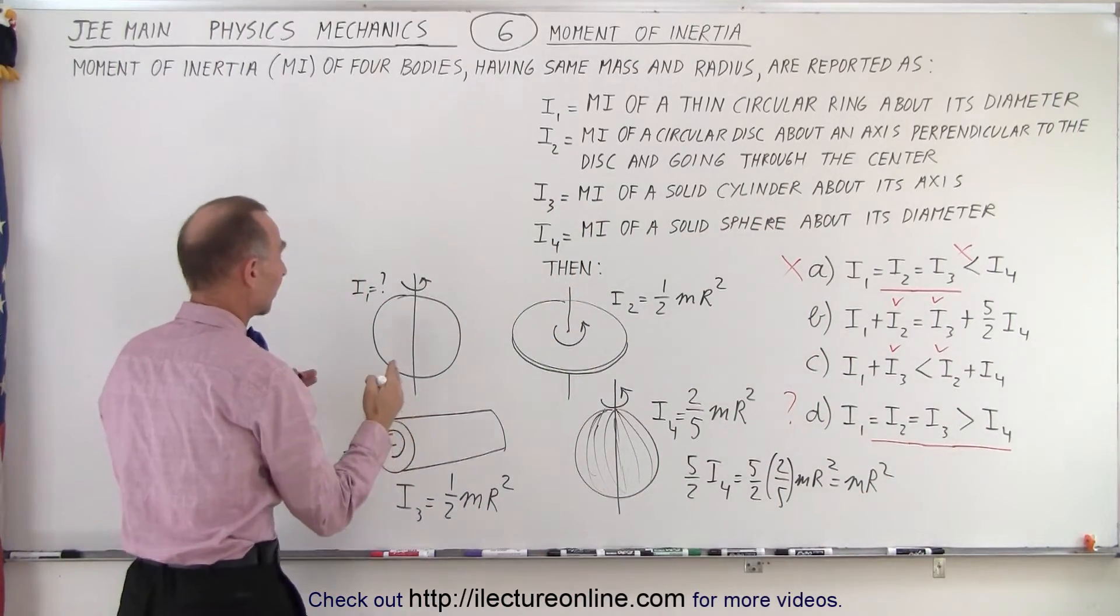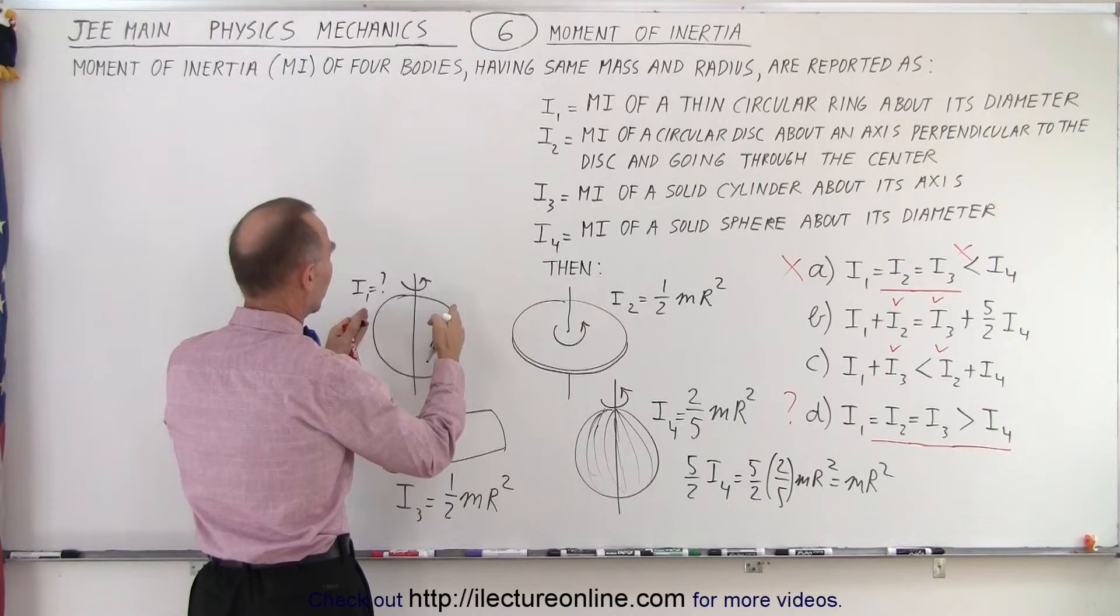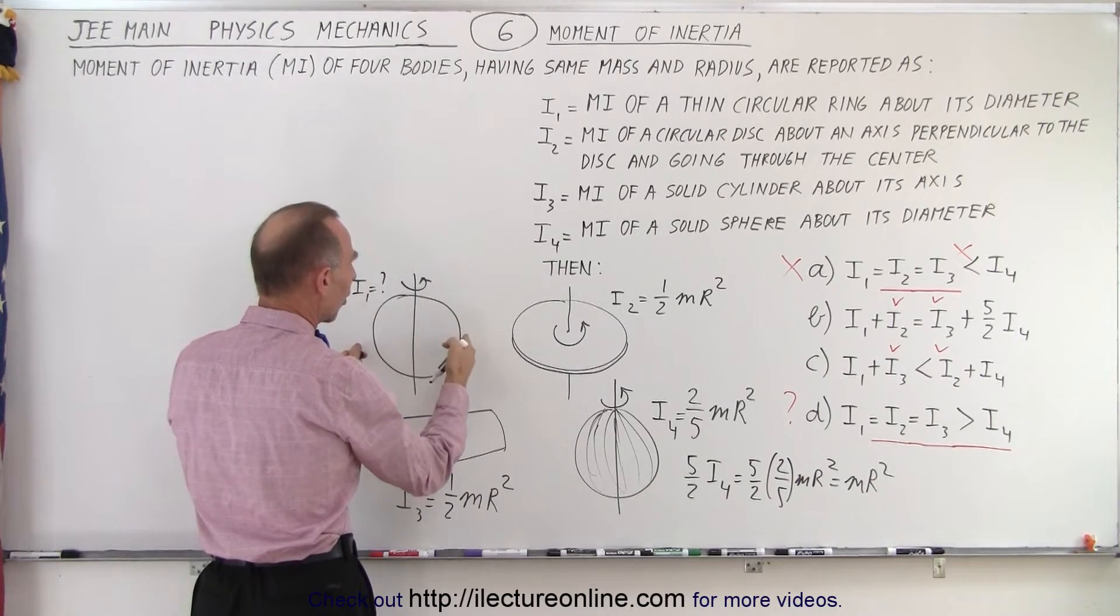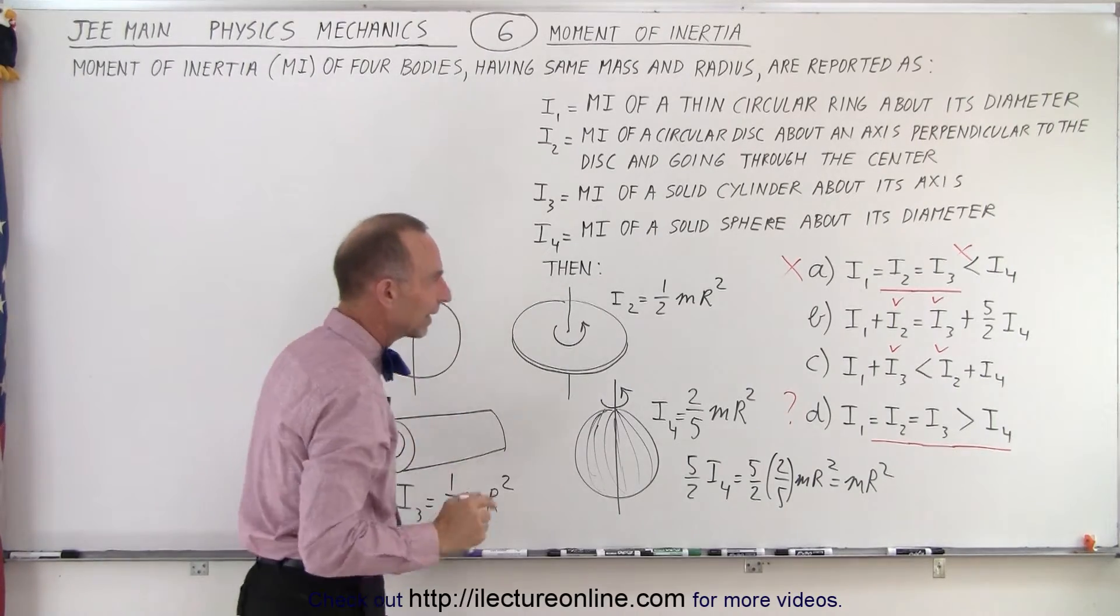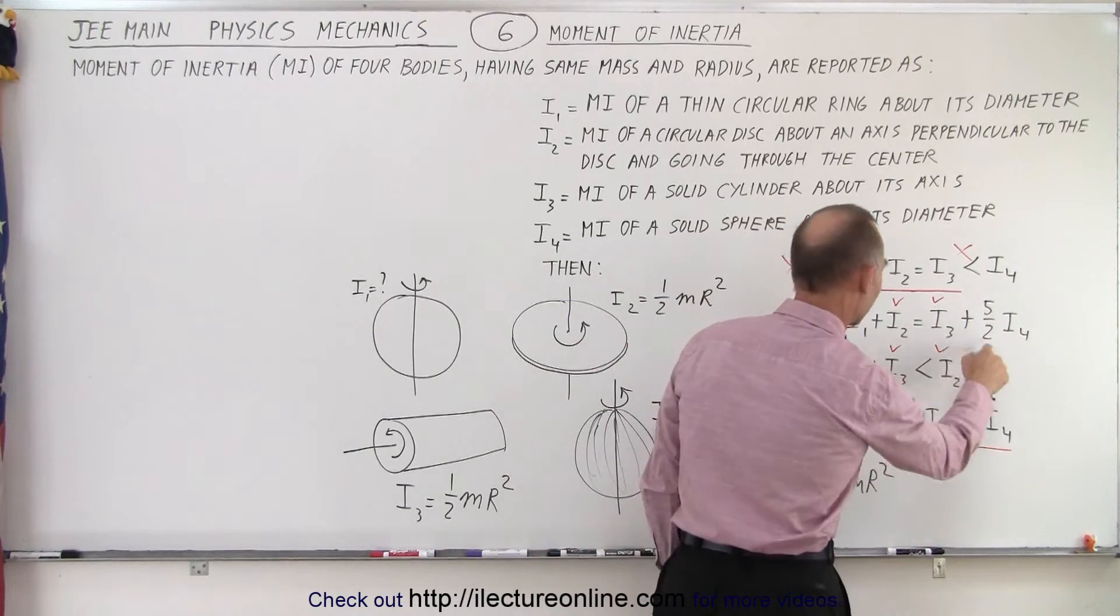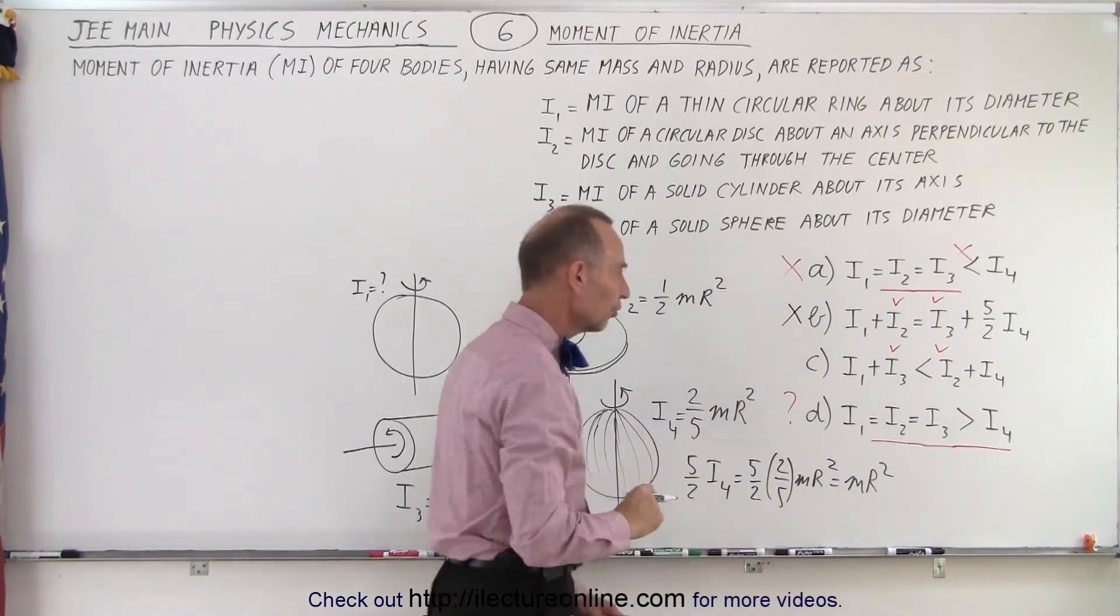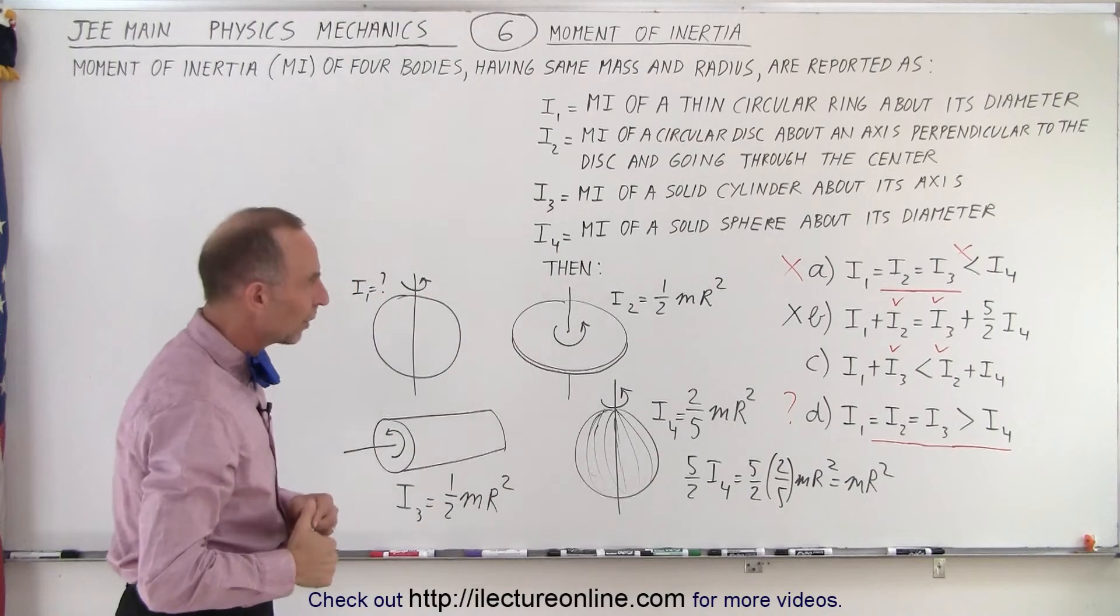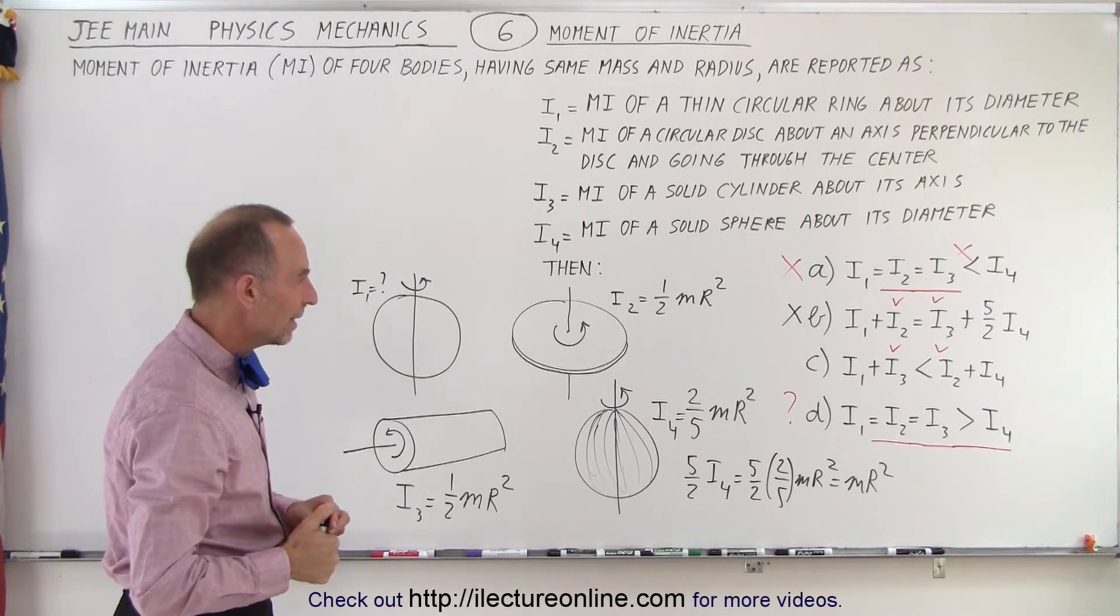There's no way because the only way you can have something equal to MR squared is that all the mass is a distance R away from the center of rotation, which is not the case. So right away I realized that this cannot be true. Just from deduction. So now we're left with C and D.